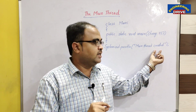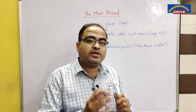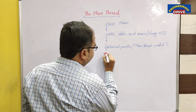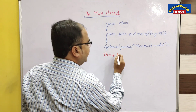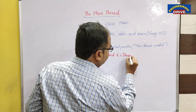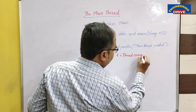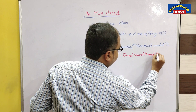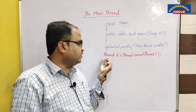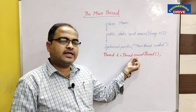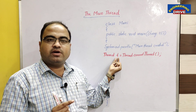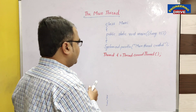To display that information, I have used System.out.println with 'main thread created' as the first line of output. Now, to display the information about the main thread, you need to make use of the Thread class and create an object for it. Here I have taken the name of the object as t, and used Thread.currentThread(). The current thread is nothing but our main thread, and the information about the main thread is stored in the object t.